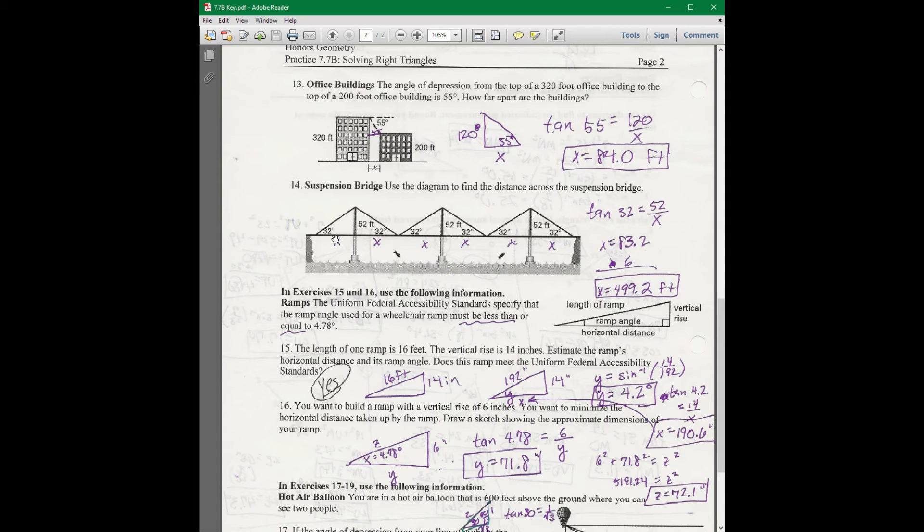Here, this is a suspension bridge. And look, these are all isosceles triangles, which means this line is also the median, which is also the perpendicular bisector, which is also the altitude, all those things. So all of these things are equal. So we have six of them. So find one of them by doing 52 divided by 10 tan 32 and multiply the answer by 6 to get 499.2 for that.